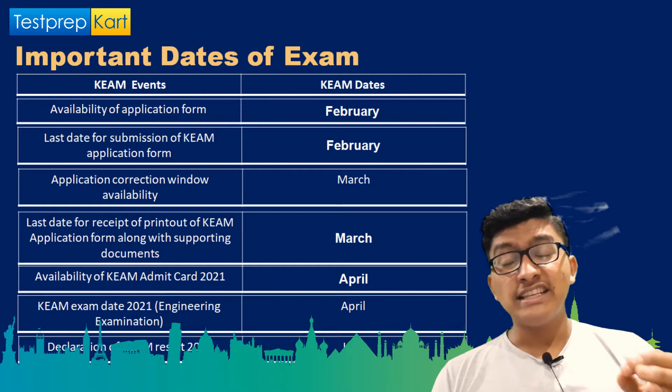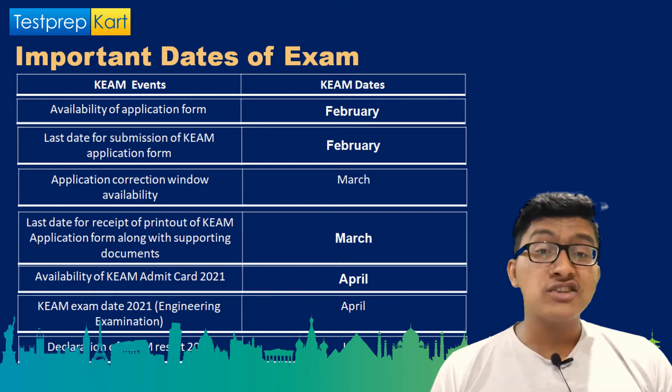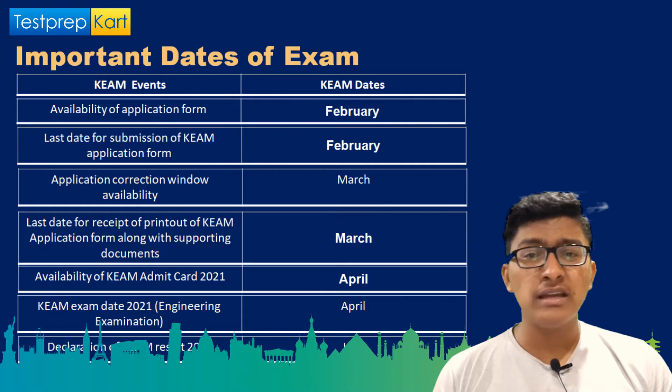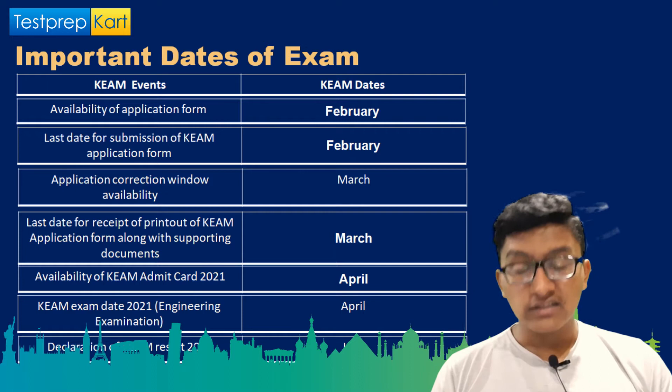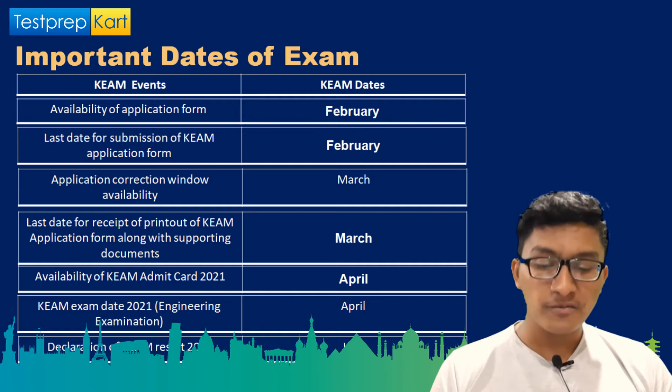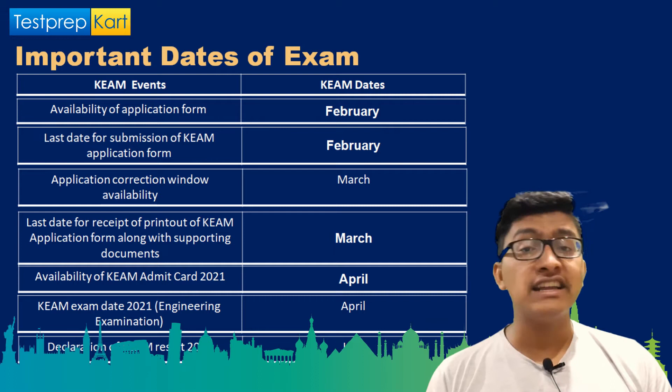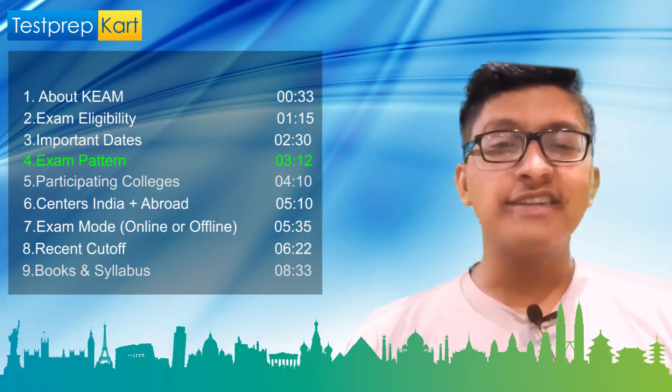Now let me tell you about the important dates for KEAM. These are unofficial dates based on previous year trends. The application date will most probably open in the first week of February, and the last date for applying will be around 25–30 February. The admit card will likely be out in the first week of April, the exam from 20–25 April, results in the last week of May, and counselling beginning in the third week of June.